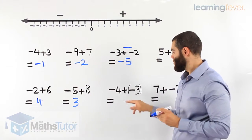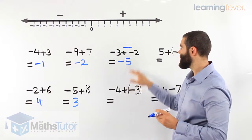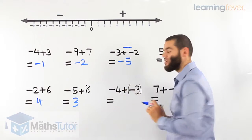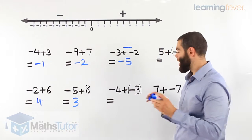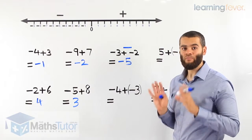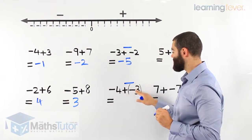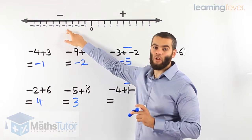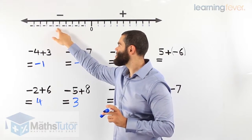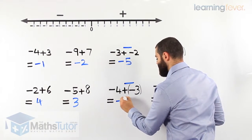Negative 4 plus, in brackets, negative 3. Don't get confused by the brackets — it's exactly the same. The brackets just distinguish the signs; sometimes you'll see them, sometimes you don't — disregard them. Plus and minus next to each other: they don't like one another, they have a fight, and minus will always win. So it becomes minus 4 minus 3. We start at minus 4 and go back 3: 1, 2, 3. Our answer is negative 7.